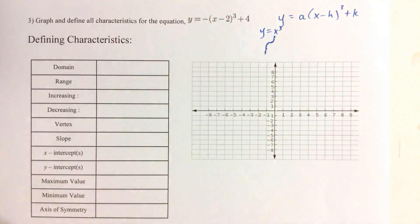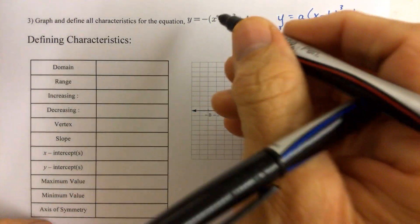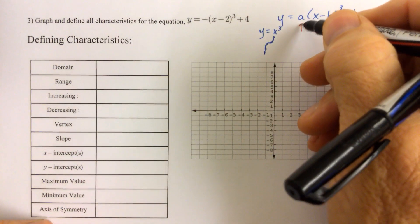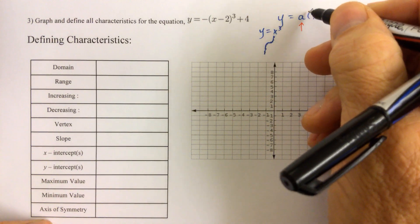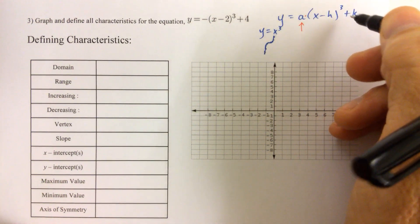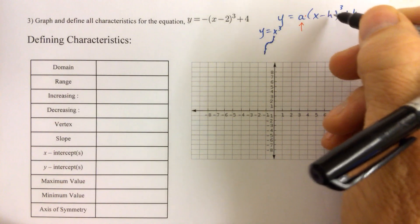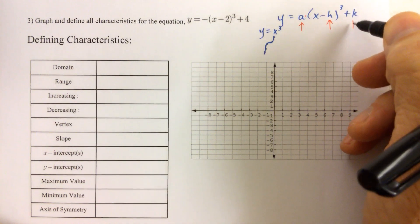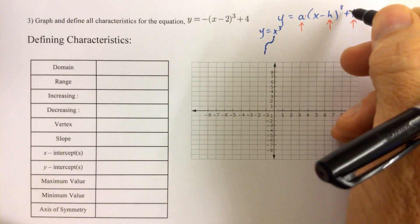When you look at the function's equation like this, you notice that the a value is the number right out in front. It's being multiplied by the set of parentheses which contains the x minus some value h, and then you add on the outside some value k.